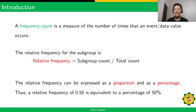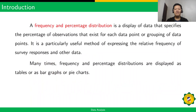Let's define first frequency count and relative frequency. A frequency count is a measure of the number of times that an event or data value occurs. The relative frequency for a subgroup is computed as: relative frequency equals subgroup count divided by the total count. The relative frequency can be expressed as a proportion and as a percentage. Thus, a relative frequency of 0.50 is equivalent to a percentage of 50%. A frequency and percentage distribution is a display of data that specifies the percentage of observations that exist for its data points or grouping of data points. It is a particularly useful method of expressing the relative frequency of survey responses and other data.